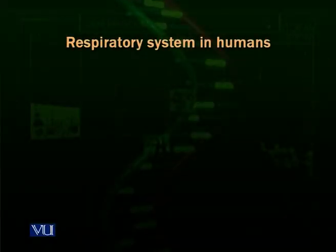We are going to talk about the respiratory system in human beings. The most complicated organism - human beings, us - we have a complicated respiratory system. We have to conduct metabolic reactions all the time, in every second. Many molecules are in the process of making and many are in the process of breaking. We need oxygen all the time, and we have to remove our carbon dioxide. For this, we have a very efficient respiratory system.